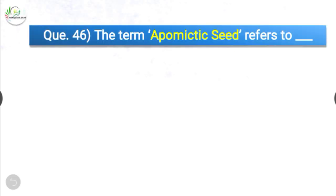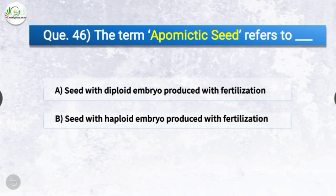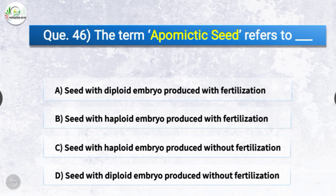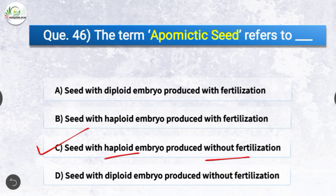Question number forty-six: The term apomictic seed refers to — seed with haploid embryo produced without fertilization.